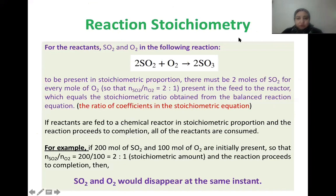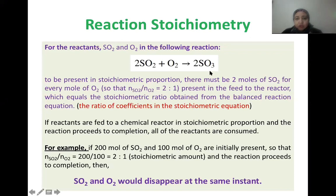For reaction stoichiometry, consider the chemical reaction where SO2 reacts with oxygen to give sulfur trioxide. We see numbers beside each compound: for SO2 the number is 2, for O2 it is 1 (not written but implied), and for SO3 it is 2. These are the stoichiometric coefficients.